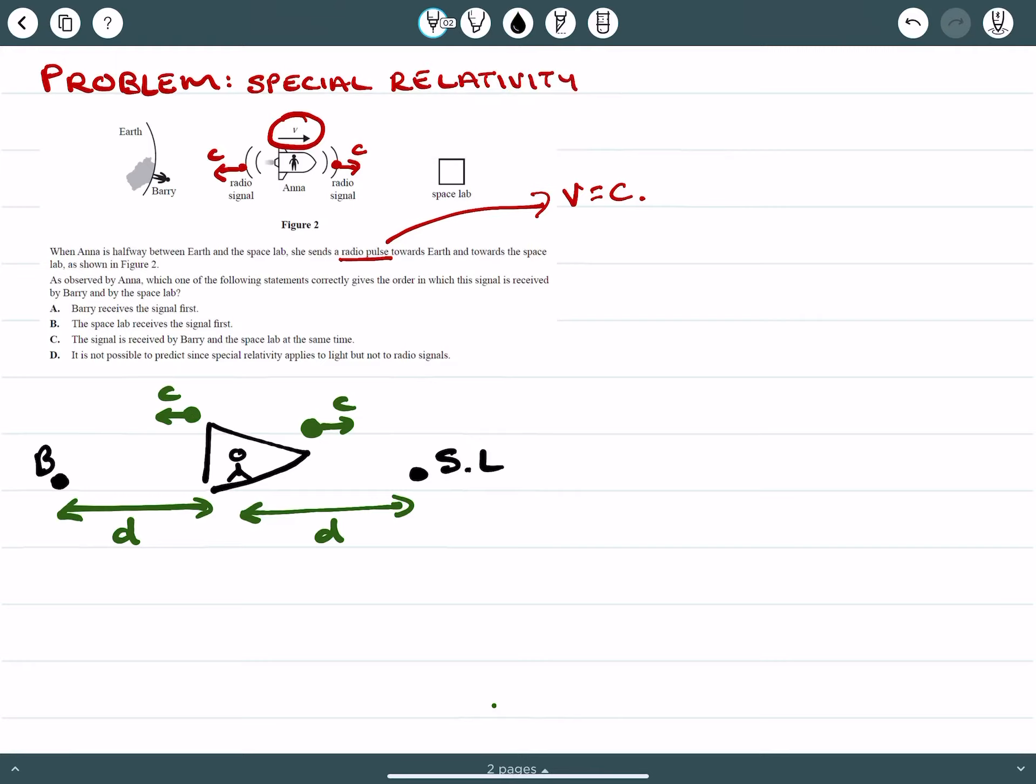However, the important thing that we need to consider is that Anna is moving at a velocity. Therefore, if we call this time initial and then we call it time some time further down the track.